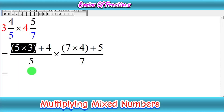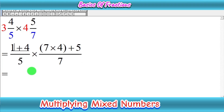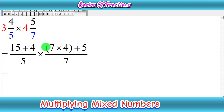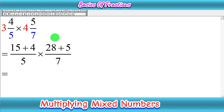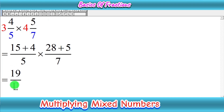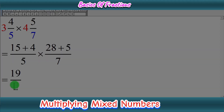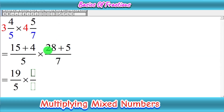Now we simplify. We know that 5 times 3 is 15, and 7 times 4 is 28. So 15 plus 4 equals 19, giving us the numerator 19 over 5 for the first fraction. For the second fraction, 28 plus 5 is 33 over 7. We have now converted both mixed numbers into improper fractions: 19/5 and 33/7.